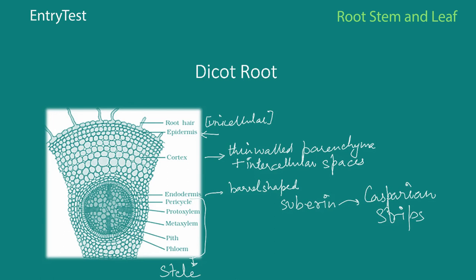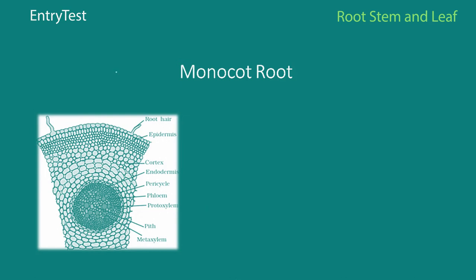Then you have the protoxylem, which is the xylem formed initially, followed by the metaxylem. The central portion is called the pith, and finally you have the bluish-violet colored cells which constitute the phloem. The parenchyma cells existing between the xylem and the phloem are sometimes also known as conjunctive tissue. That is the basic structure of the dicot root.